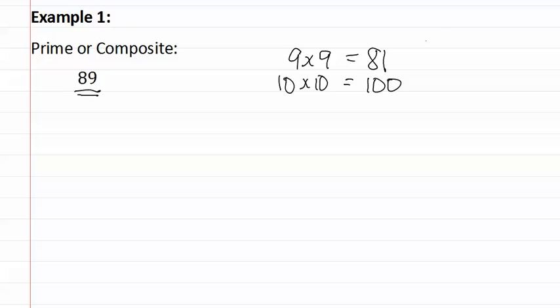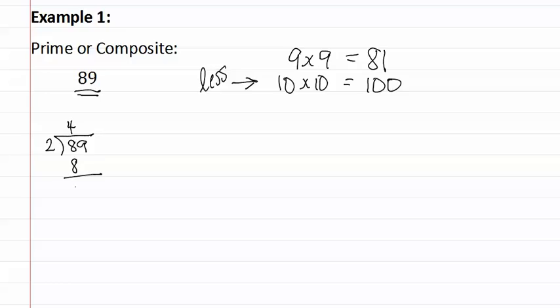We now know that we must look at all of the prime numbers that are less than ten. We start dividing each of these prime numbers into eighty-nine to see if any can divide in evenly. Let's start with the first prime number, which is two. Two goes into eight four times, and two goes into nine four times, leaving a remainder of one, which means two is not a possibility.